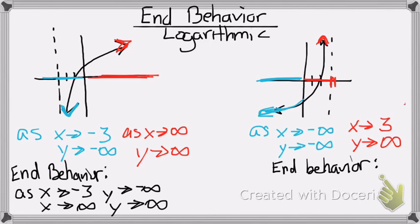So, my end behavior will say, as x approaches negative infinity, y approaches negative infinity. And, as x approaches 3, my y approaches positive infinity. And that's my end behavior. I'll see you guys later.